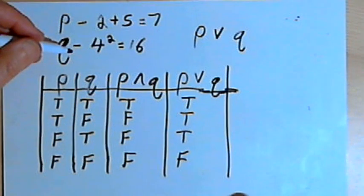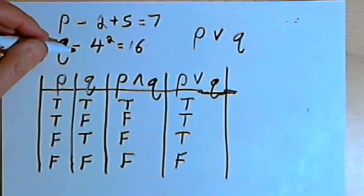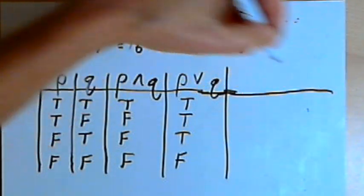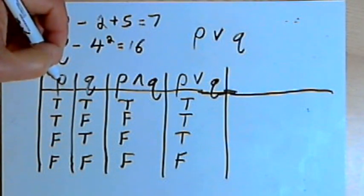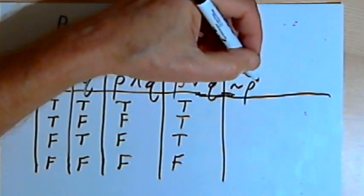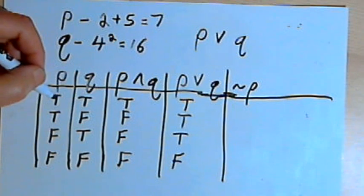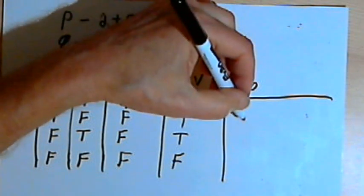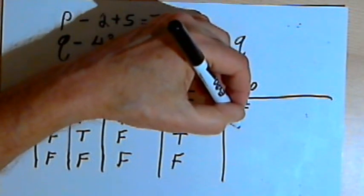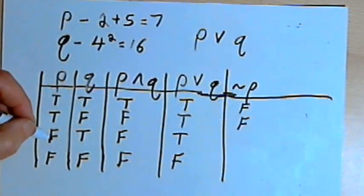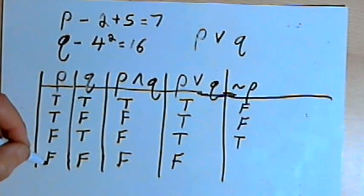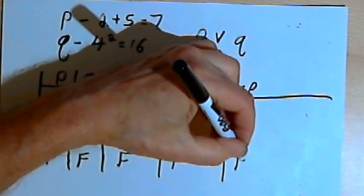This is basically how you go about making a truth table. We can add as many columns as we want. If I want to know what happens for not P, I can make a not-P column. If P is true, not P is false. When P is false, not P is true.